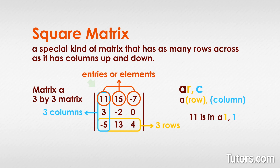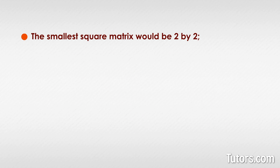The second subscript letter refers to columns. In our square matrix, the 11 is in position a_11, the very first position for any entry, while the negative 7 is in the a_13 position. The subscript 1 places it in the first row, and the subscript 3 makes it the third entry or element. The smallest square matrix would be two by two.